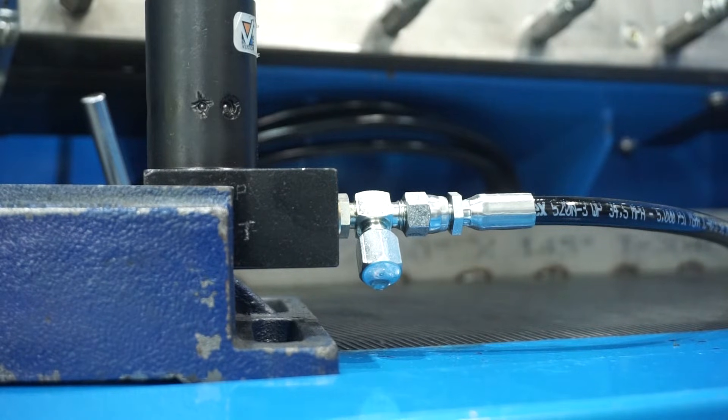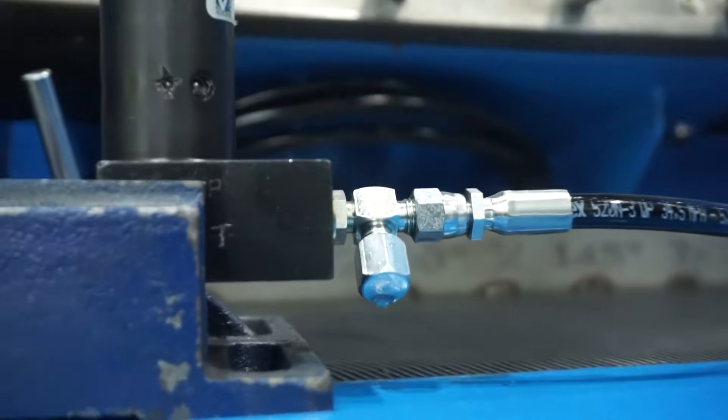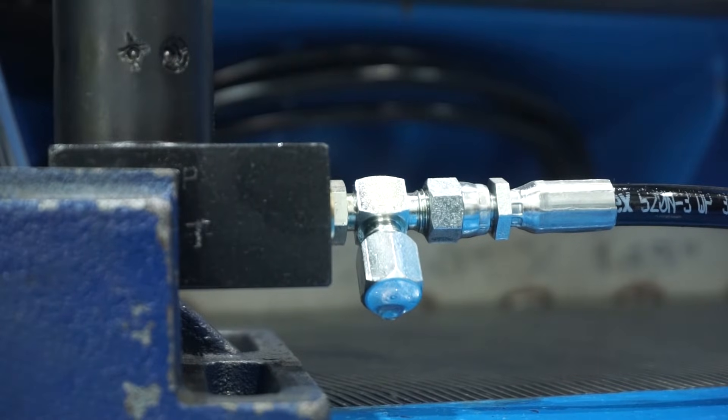Charge a circuit at low pressure. Starting at the fitting farthest from the power supply, loosen the fitting enough to allow a steady flow of oil.